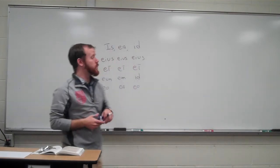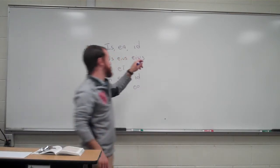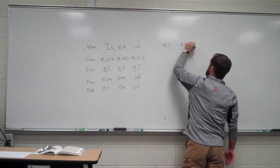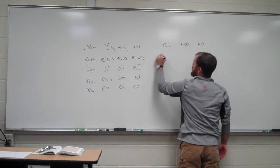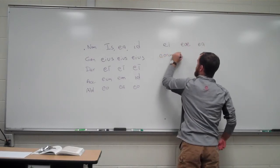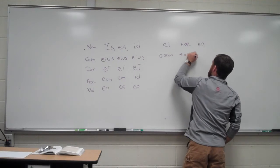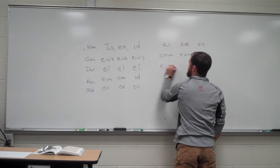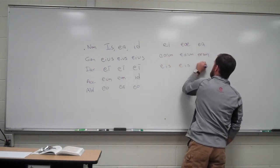All right, so now we go over to the plural side. So we have ei, ei, ea, eorum, earum, eorum. Then we have ei, ei, eis.